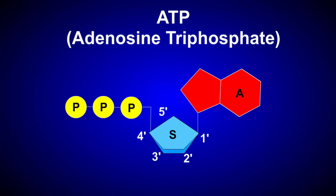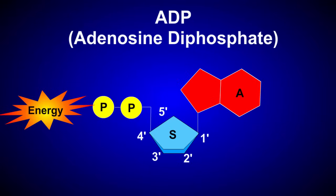When energy is needed, the terminal phosphate group is removed, releasing energy and forming adenosine diphosphate, which may then be recharged by the energy pathways of the cell.